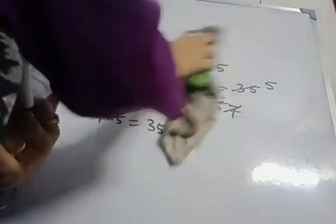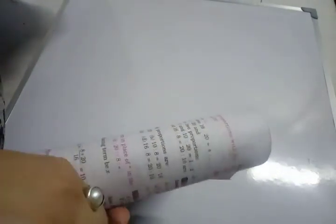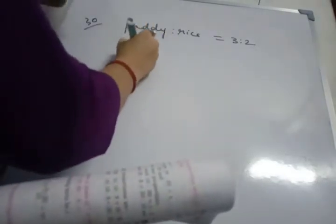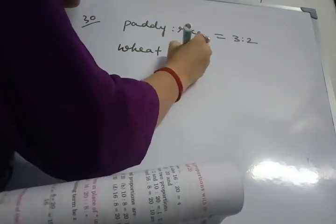Next sum is from the previous exercise. Sum number 30. Previous exercise. That is exercise 40. Sum number 30. It's given in the question. Ratio between paddy and rice obtained from it is 3 is to 2. Paddy and rice ratio is 3 is to 2. And rice is obtained from the paddy only. And ratio between wheat and suji. Wheat suji ratio is given as 4 is to 3.